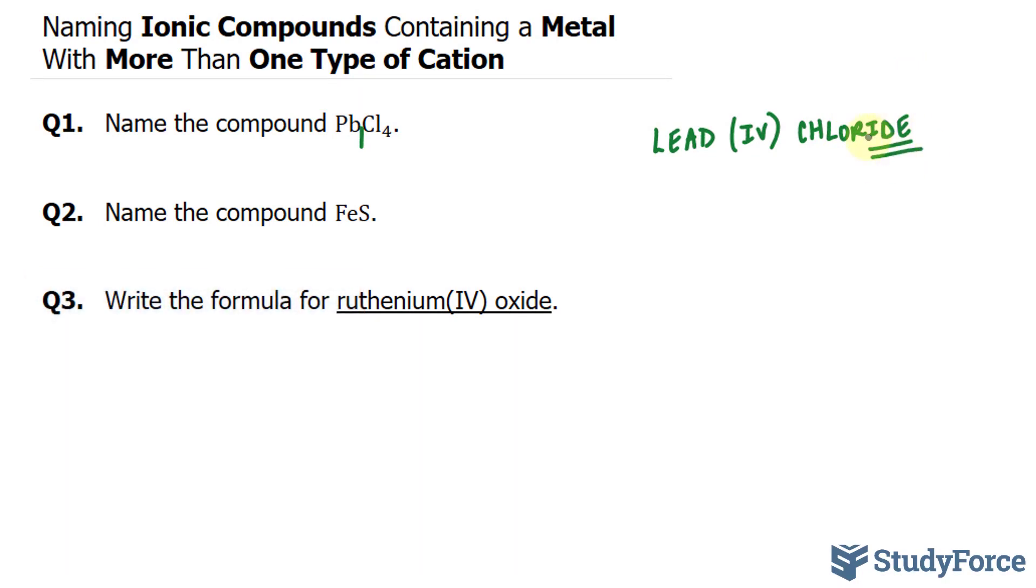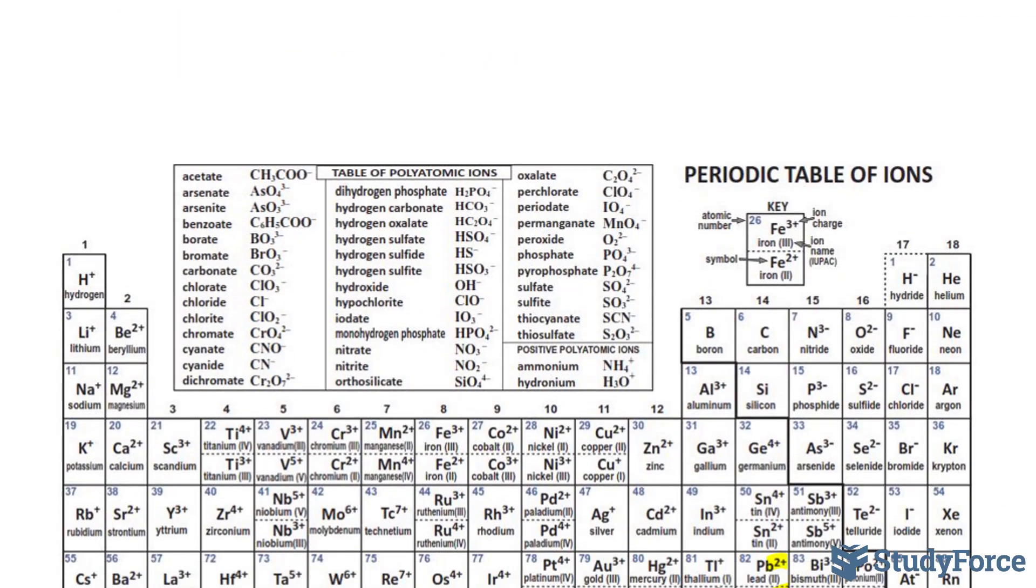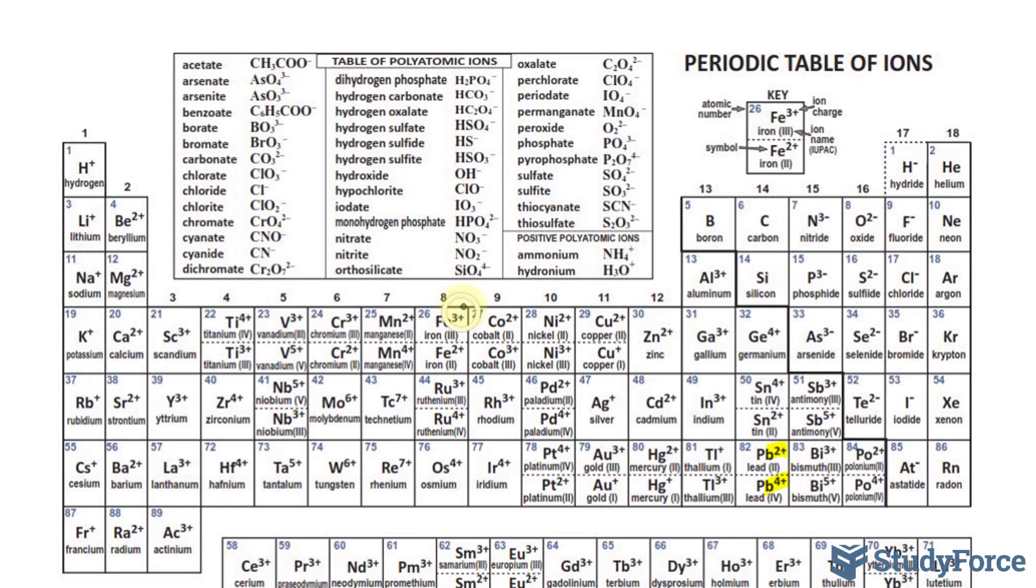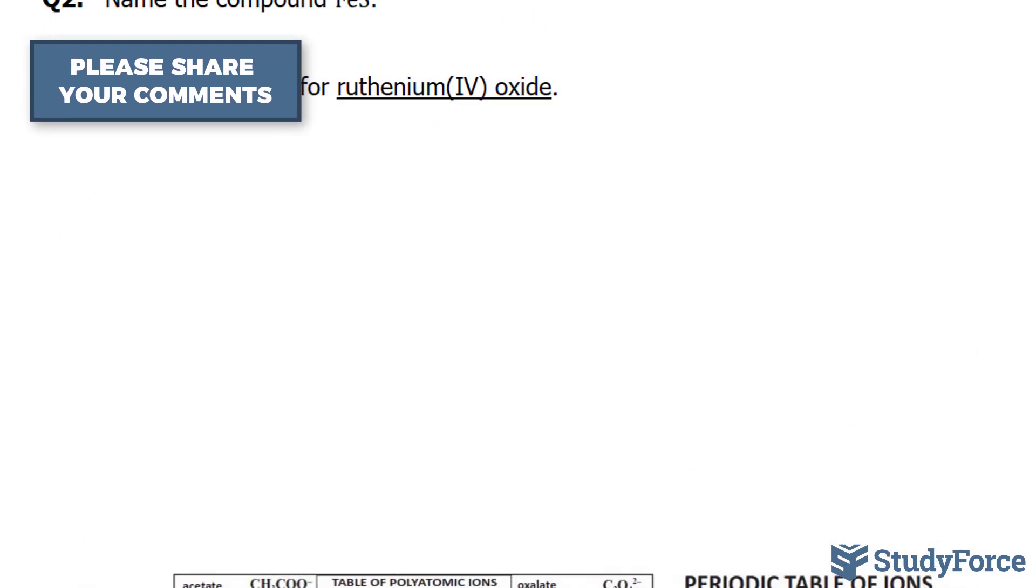Let's move on to question two. Name the compound FeS. Fe represents iron. S represents sulfur. Iron has a charge of either 3 or 2. Sulfur has a charge of 2. So which one is it, 3 or 2? Let's find out.